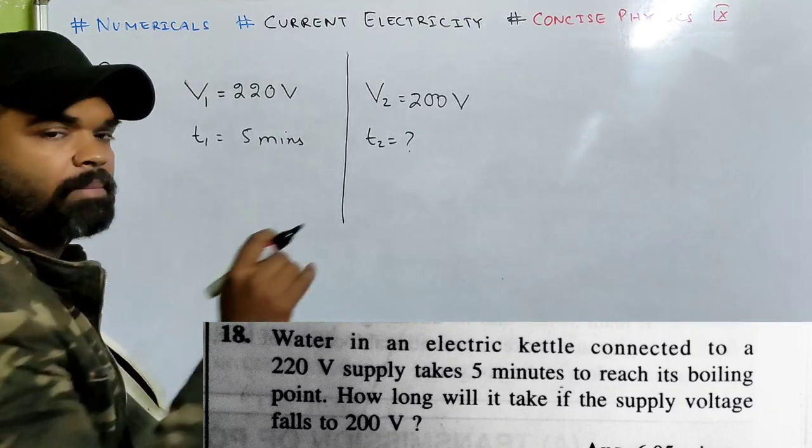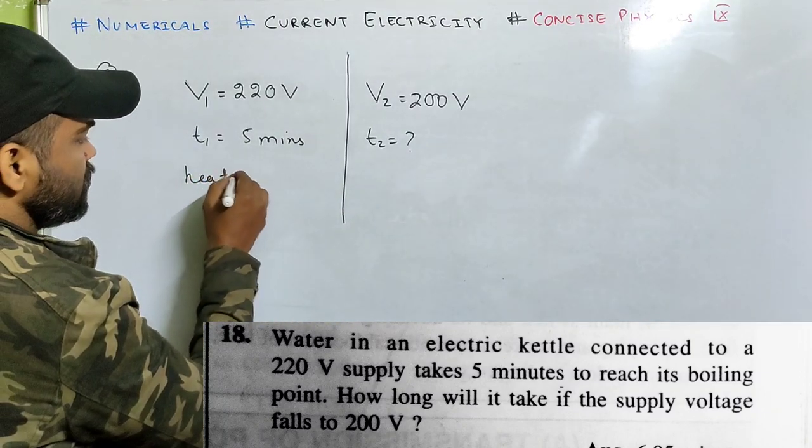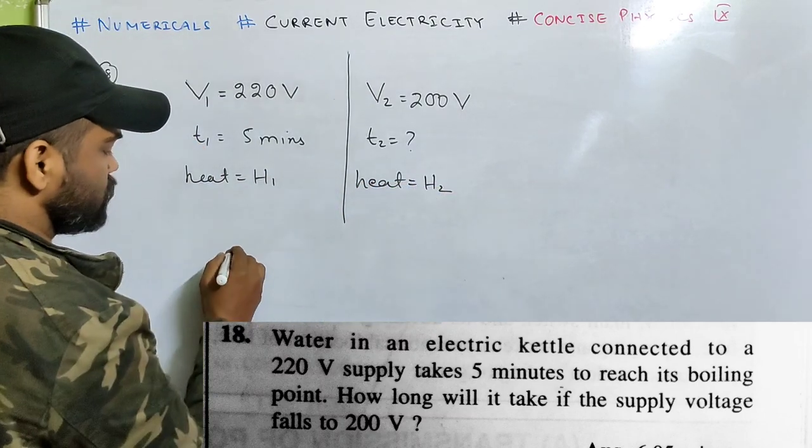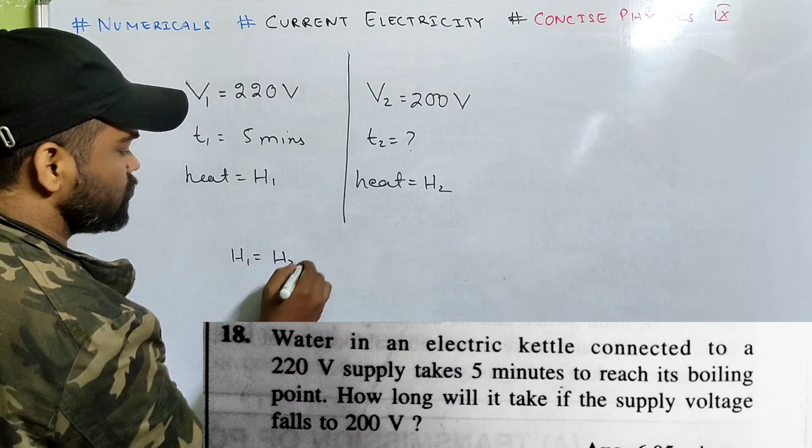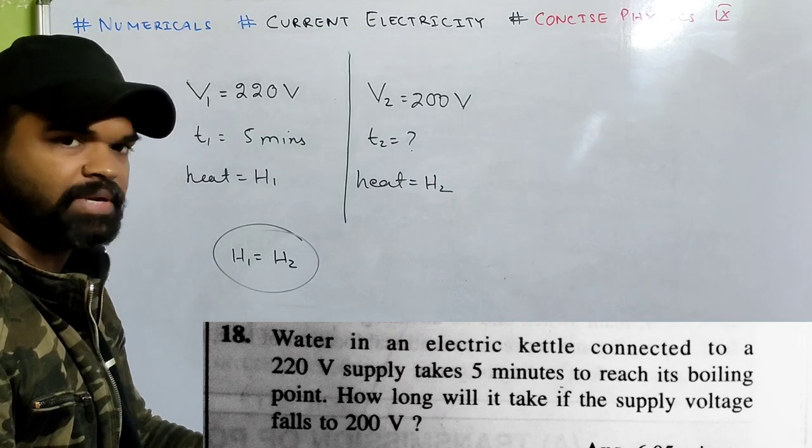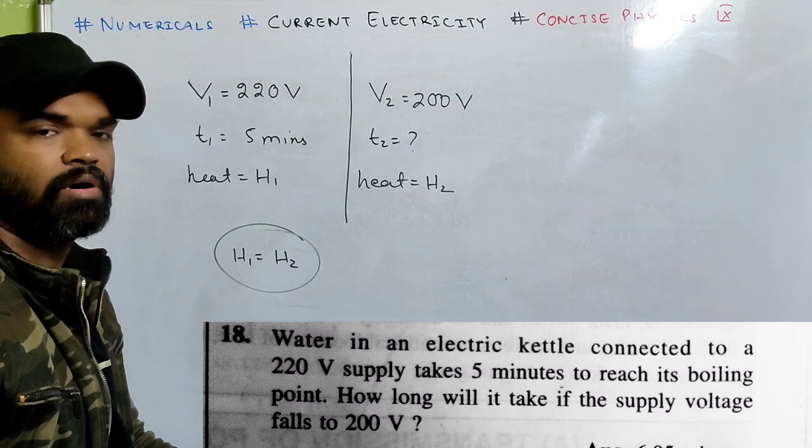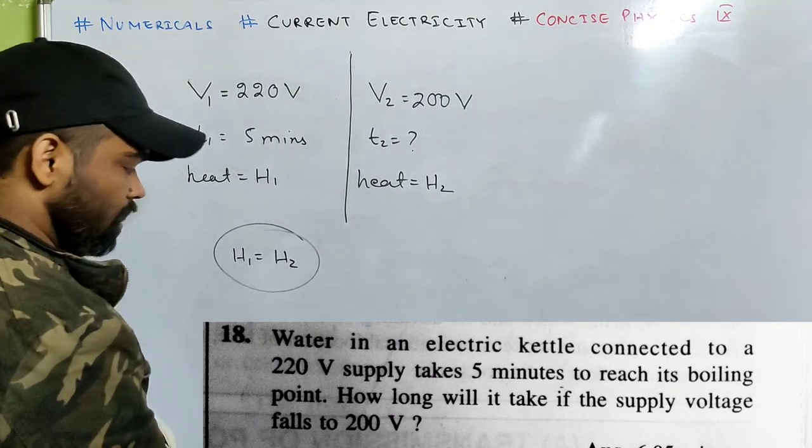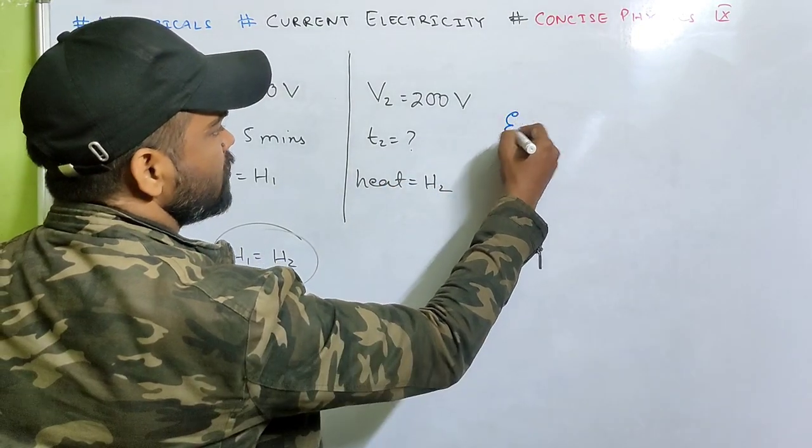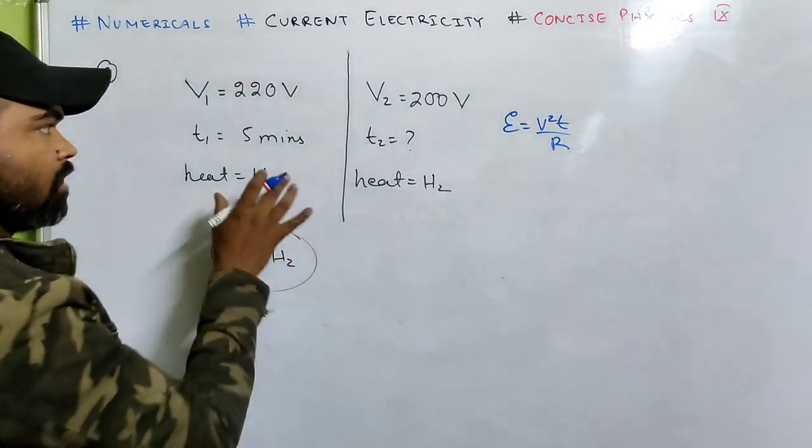Try to understand - to reach its boiling point, whether case 1 or case 2, the amount of heat required will be the same. So H1 clearly will be equal to H2, there's no doubt in that, because the amount of heat required to reach boiling point will be same whether the voltage falls or increases.